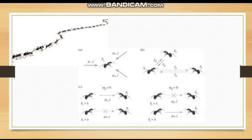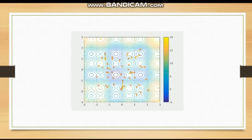Can you see the line of ants? These ants are following each other, and this is a good example of a network. Have you ever thought about how they are communicating with each other and how they are making a network? They are sending some signals and some senses of smell.